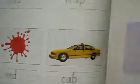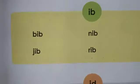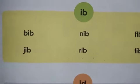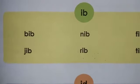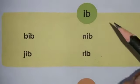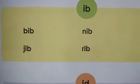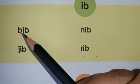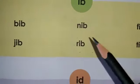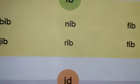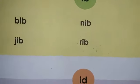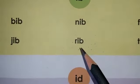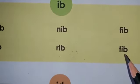Now coming on to the next page, which is page number three. On page number three we are going to revise the clusters which we have already done. First is the IB cluster. What are the words? B-I-B bib, N-I-B nib, F-I-B fib, J-I-B jib, R-I-B rib, and T-I-B tib.